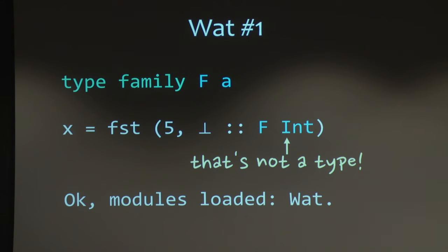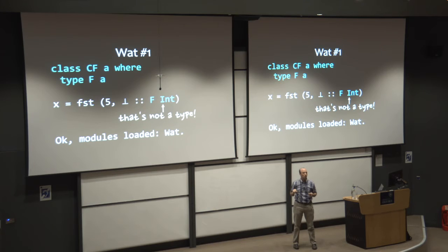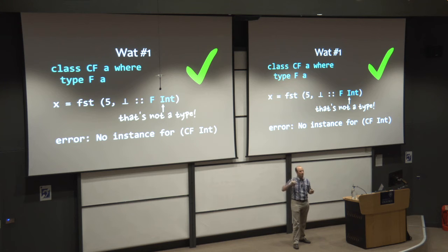So instead, if we put this into a class, and now we're sort of moving toward this constrained type families idea, we get this nice error message. So int is not in the domain of f. We don't have any definition here. And so we get no instance for cf int. So that's how constrained type families would prevent us from writing this bad code.